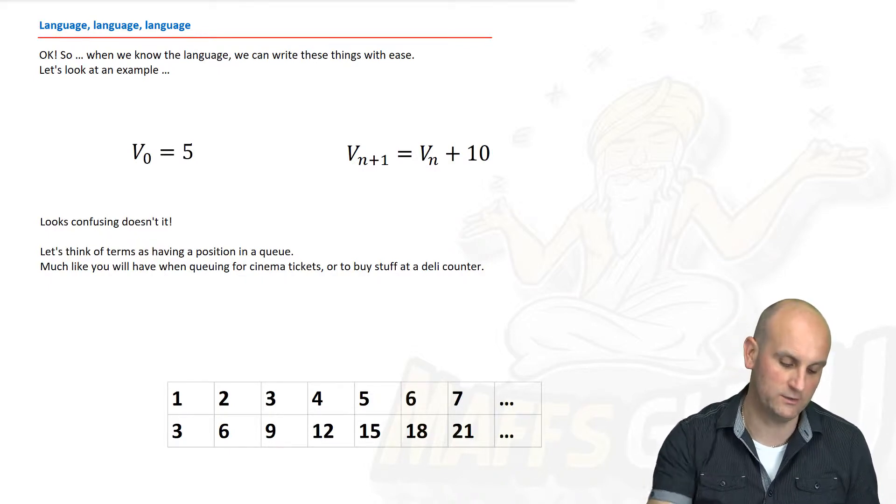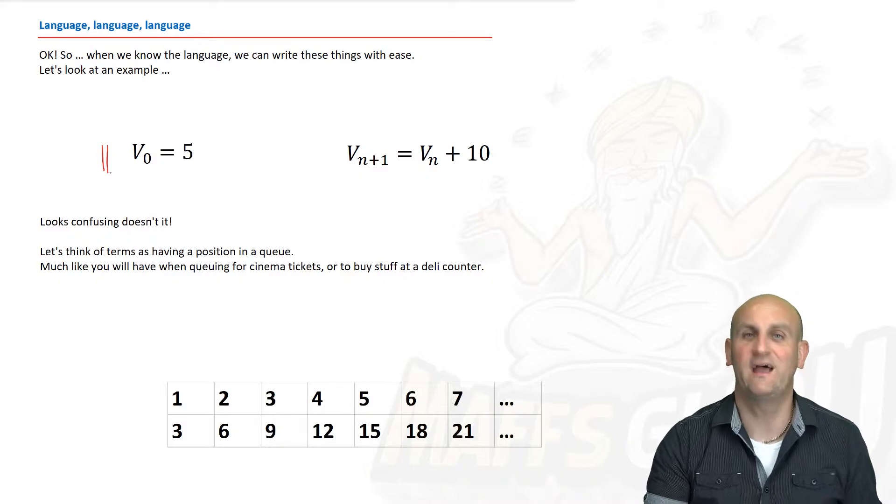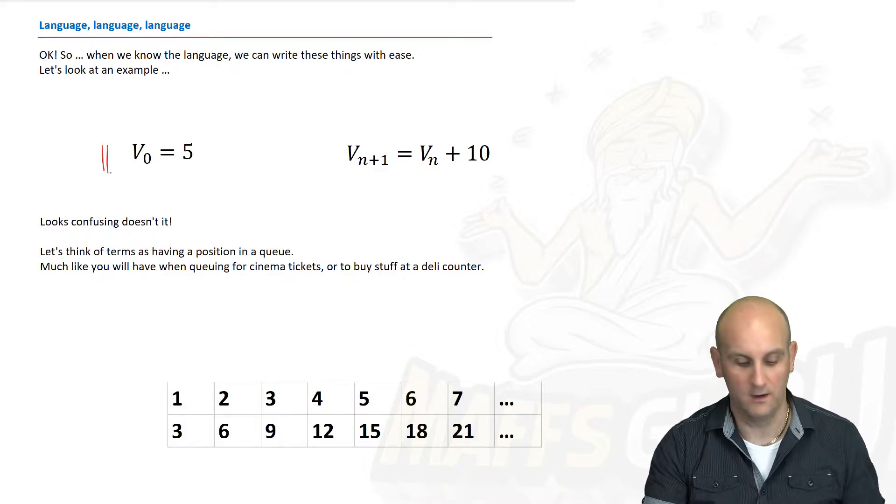Here's an example. Oh, my goodness gracious me. V with a little 0 equals 5 and then V n plus 1 equals V n plus 10. Huh? What is that all about, Barry? Well, basically, it looks confusing, but let's break things down.